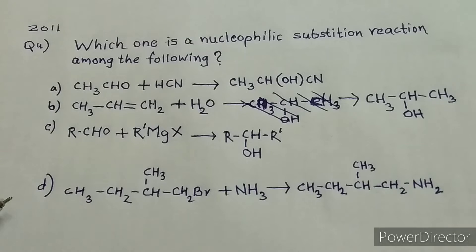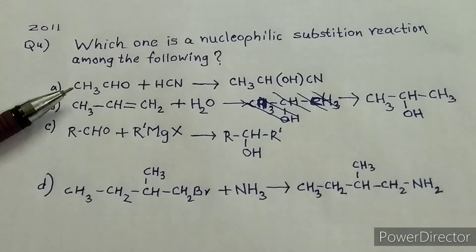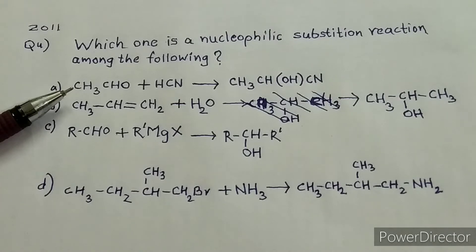If you observe carefully in reaction D, bromine is displaced by the nucleophile NH2. Therefore, reaction D is a nucleophilic substitution reaction. Let us now look in detail at reactions A, B, C, and D to identify which is the nucleophilic substitution reaction.